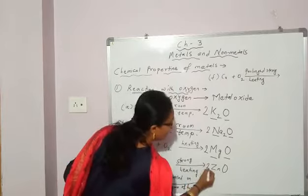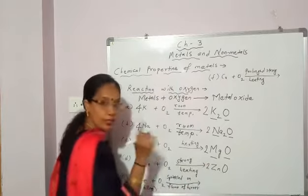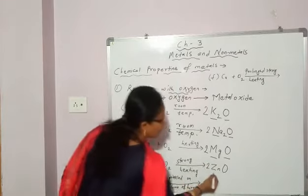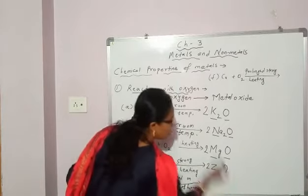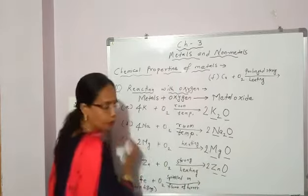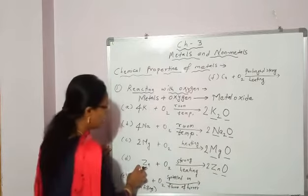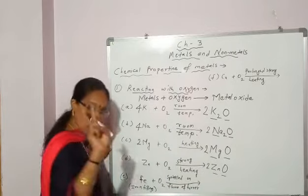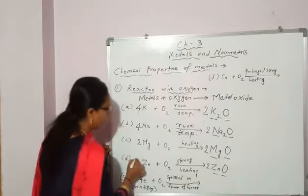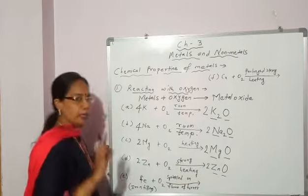In front you will add 2. Now this 2 is for zinc as well as oxygen. Zinc atoms become 2 on one side, 1 on the other — you will make it 2. The equation is now balanced.